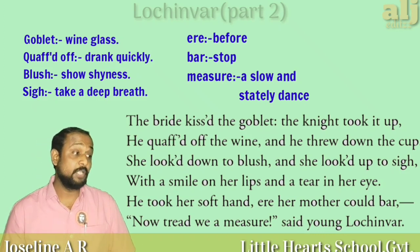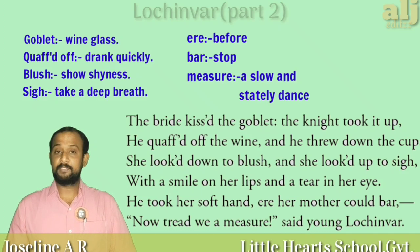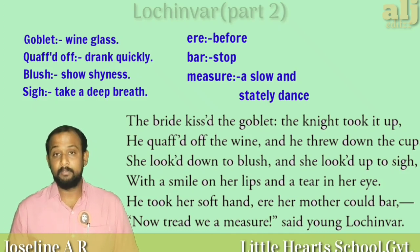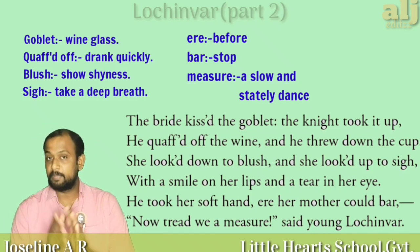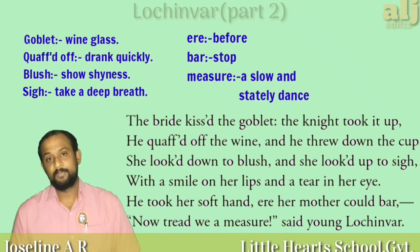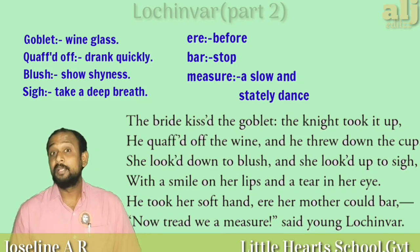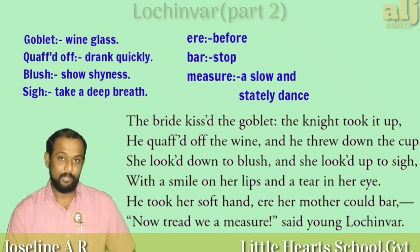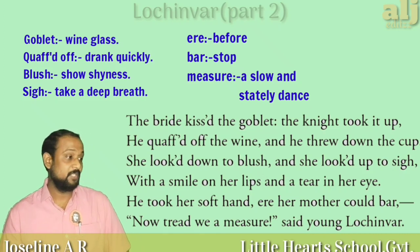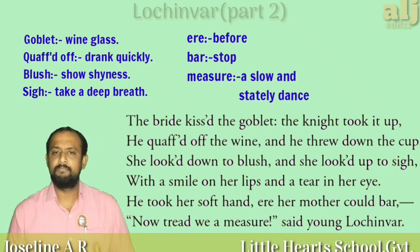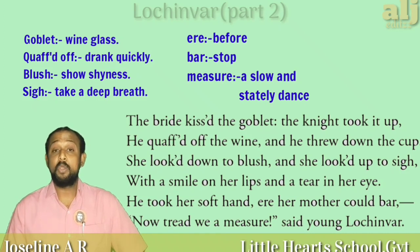See how she reacted. She looked down to blush — she felt extremely shy. She looked up to sigh — she was relaxed and took a long breath. Sigh means to take a long breath. She was extremely relieved and relaxed because she was forced to marry someone else by her parents and brothers. She was not interested in marrying a coward and a dastard because she loved someone who was extremely faithful and fearless — Lochinvar. She felt shy and was of course extremely happy, with a smile on her lips and tears in her eyes — tears of happiness, not sadness, and also because she was seeing Lochinvar after a long time.